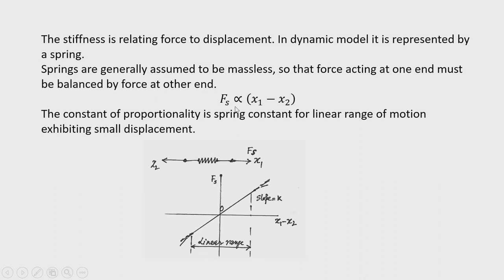Spring force is proportional to relative displacement. If displacement at one end is x1 and at the other end is x2, relative displacement is x1 − x2. Plotting spring force Fs against relative displacement, the behavior is linear up to a certain extent; in the linear region Fs = k(x1 − x2) where k is the spring constant equal to the slope of the straight line. For the damping element, a dashpot model is used — a piston fitting loosely in a cylinder filled with viscous fluid that flows around the piston, dissipating energy.